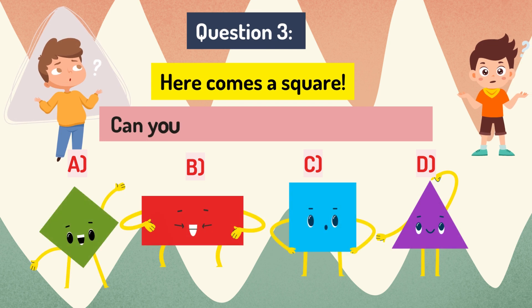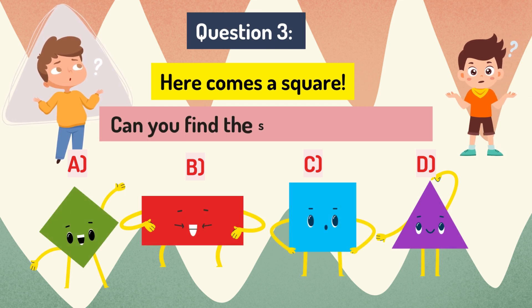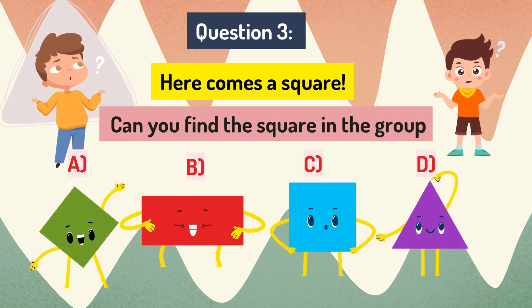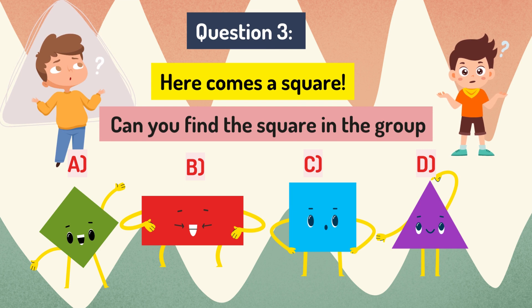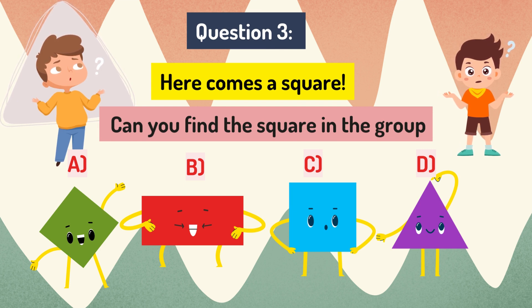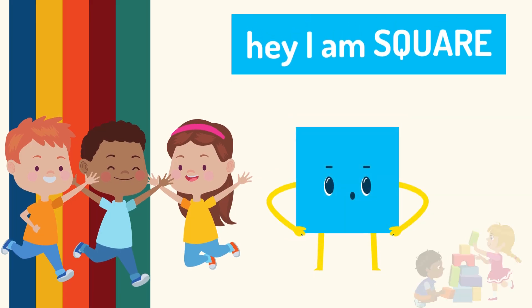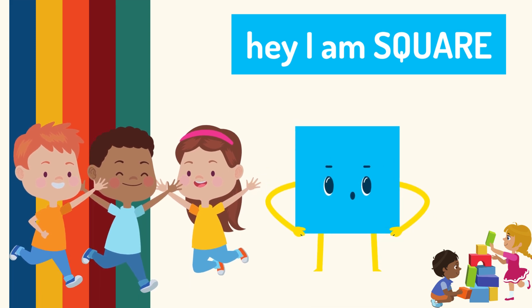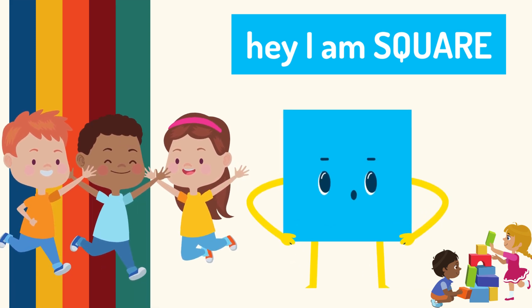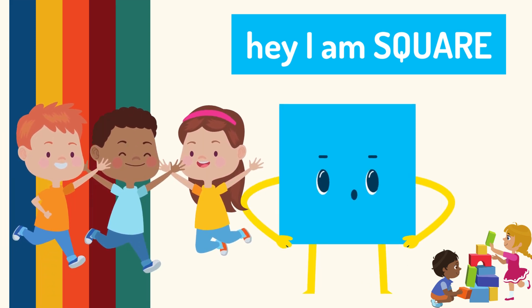Let's move forward to question number 3. Here comes a square. Can you find the square in the group? A, B, C or D? Good guess. Hey, I am square.